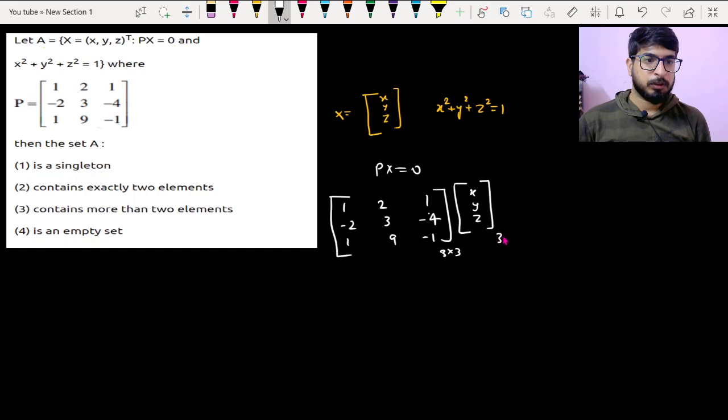Equal to 0 matrix, so we get 3 by 1 only 0, 0, 0. So if I multiply them I'll get x plus 2y plus z, that would be equal to 0.